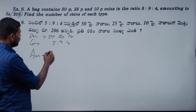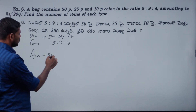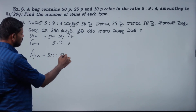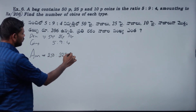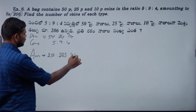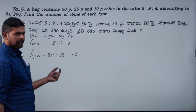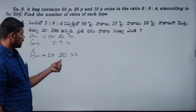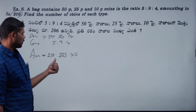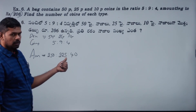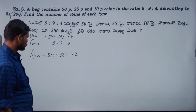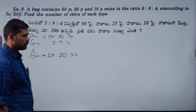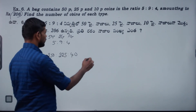50x5 is 250. 25 into 9 is 225. 10 into 4 — this is the denominator. Total: 200, 200, 400, 440, 490, 515. So 250, 475, 515.